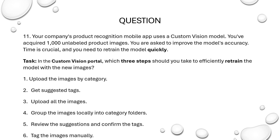Now to the options: Upload the images by category. Get suggested tags. Upload all the images. Group the images locally into category folders. Review the suggestions and confirm the tags. Tag the images manually.